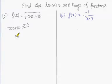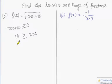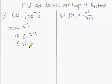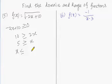So 10 should be greater than or equal to 2x, which means 5 should be greater than or equal to x. In other words, x should be less than or equal to 5.